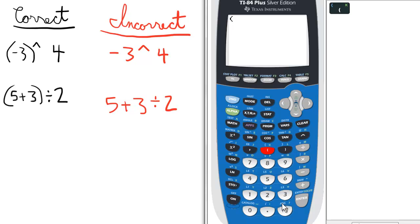Open parentheses, negative 3, close parentheses, raised to the 4th power. And negative 3 in close parentheses, raised to the 4th power is 81.